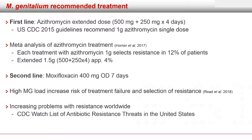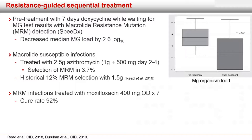For second-line treatment, moxifloxacin 400 mg once daily for seven days has been the standard regimen. For both treatments, a high MG load increases the risk of treatment failure and selection of resistance. This selection of resistance has been an increasing problem worldwide, and M. genitalium is now on the CDC watch list of antibiotic resistant threats in the United States. Knowledge about high loads and resistance selection led the Australians to develop resistance-guided sequential treatment, using seven days of doxycycline while awaiting M. genitalium test results including macrolide resistance mutation detection using the commercially available SpeeDx assay.